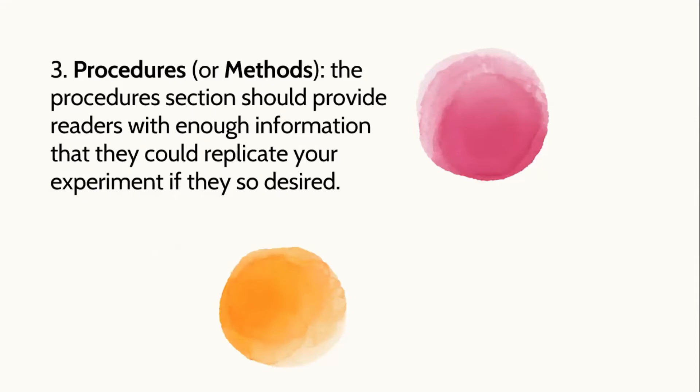Next is the procedures or methods. The procedure section should provide readers with enough information that they could replicate your experiment if they so desire. This is the section wherein the process of the experiment is indicated — a very important part since we can see how the researchers conducted their study. We can also confirm if the process can be replicated by other researchers when a similar study is being conducted.